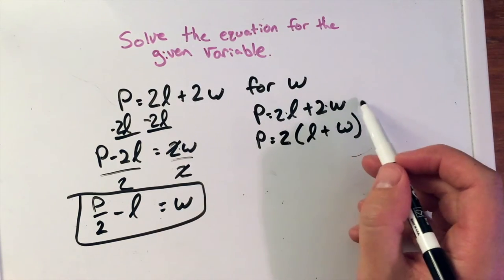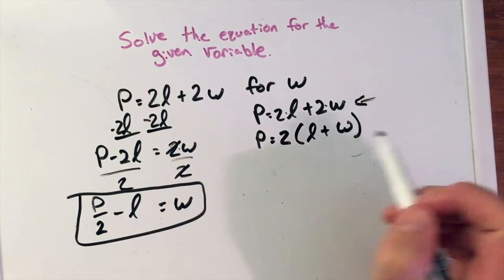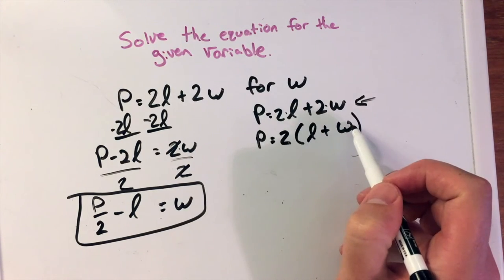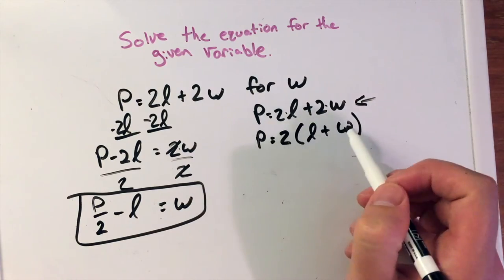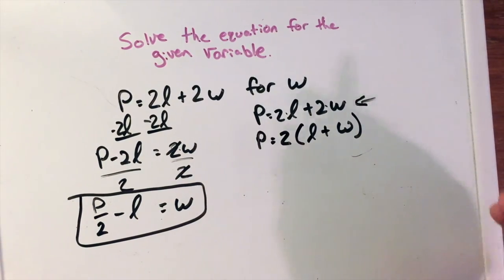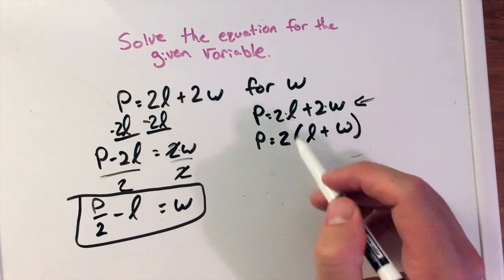Now notice we can easily get back to this equation right here if we distribute this 2 back to both parts, right? The 2 times L and then 2 times W. Make sure we would distribute that. But we're kind of doing a reverse distribute. So I'm pulling out that 2.